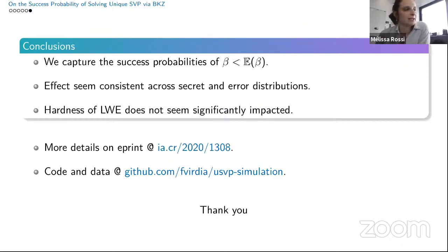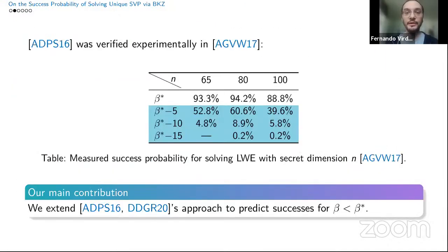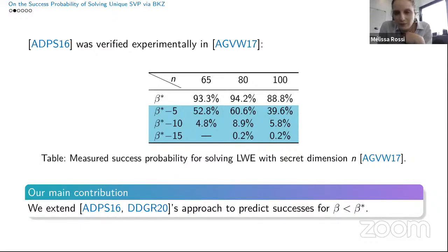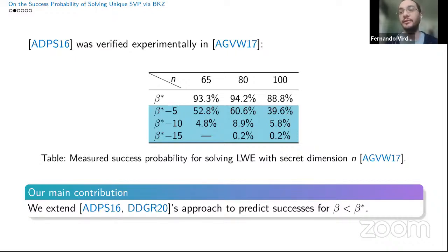In the experiments shown in the first table, it seems the success probability decreases when the dimension n increases. Is that a general thing you noticed, or is it an artifact from the experiments? We didn't see something specifically like this — it might be artifacts. What worried us most was that there seems to always be a gap of 10 that still results in a high probability attack, and we worried that might depend on the secret dimension. But from running the simulator on cryptographically-sized parameters, it doesn't look like that's the case — the standard deviation stays relatively tight. It might just be an artifact of the particular instances chosen.